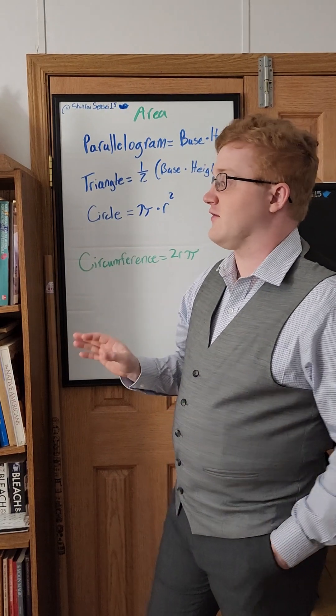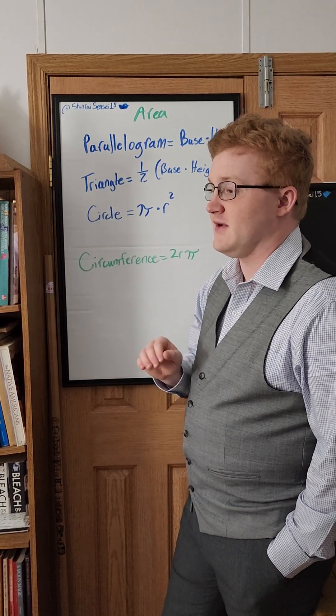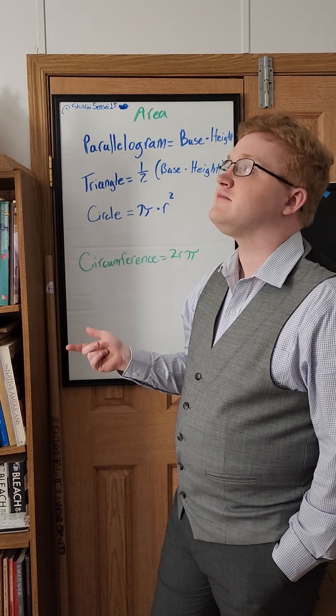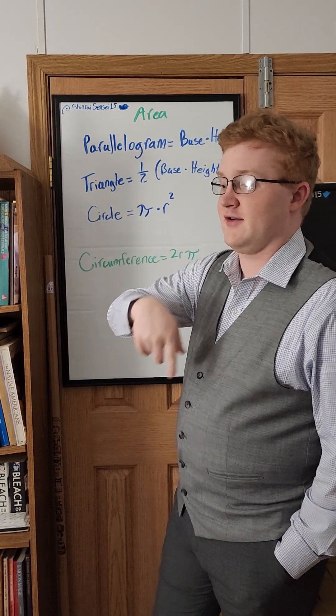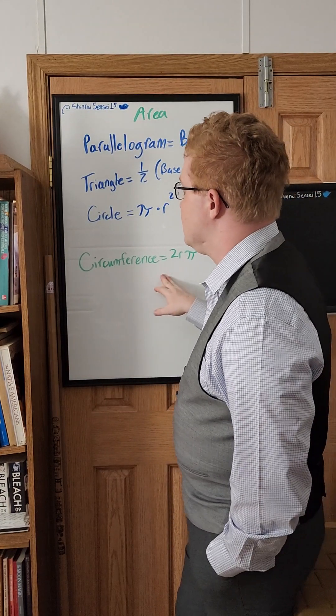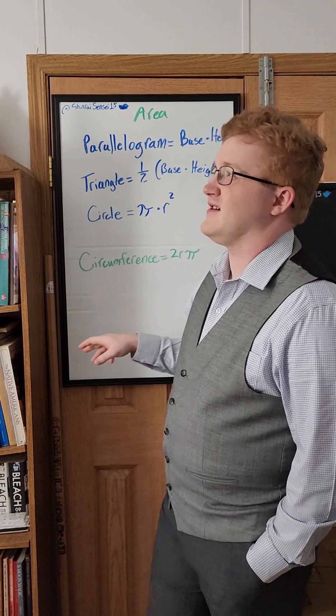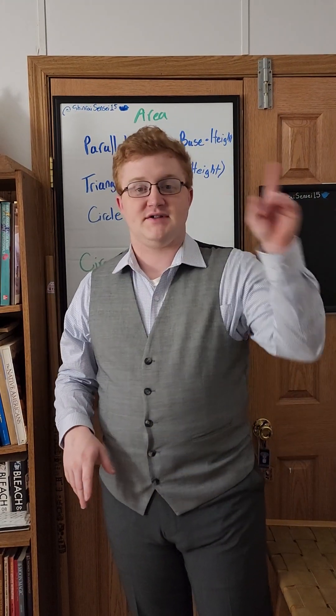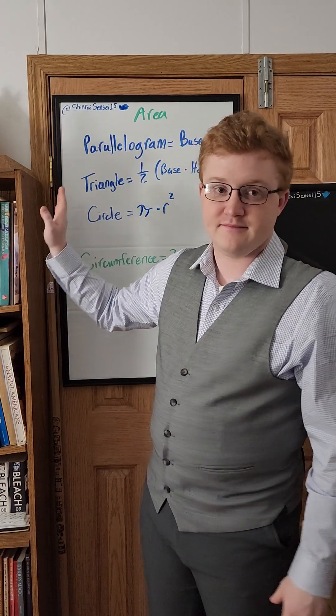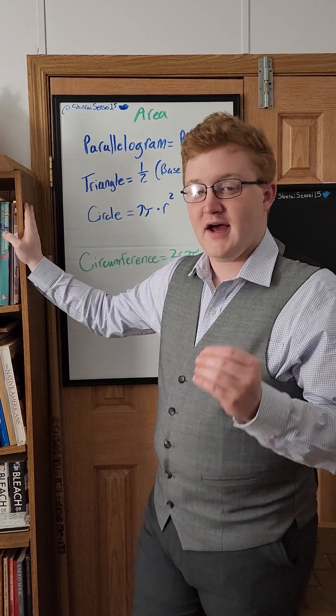But the circumference is exclusive to circles in the sense that there is nothing else really like it, except maybe the total outer dimensions of a square or something. The circumference of a circle is basically like finding the outer edges and measuring the outer edges of the circle.